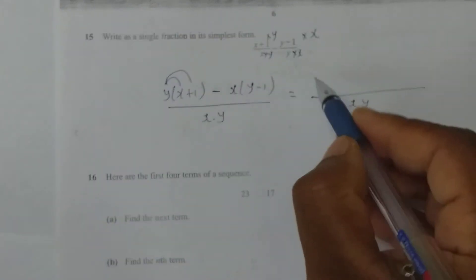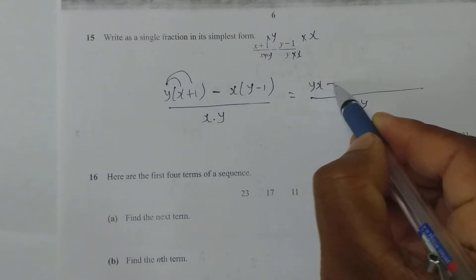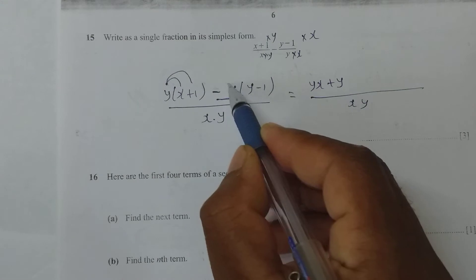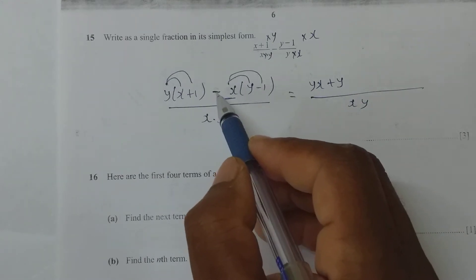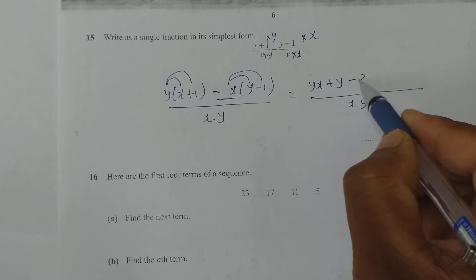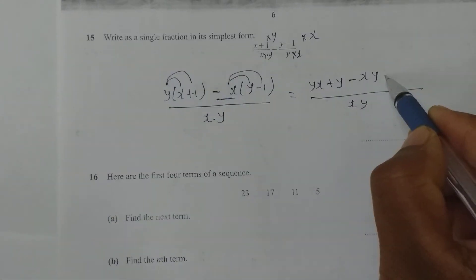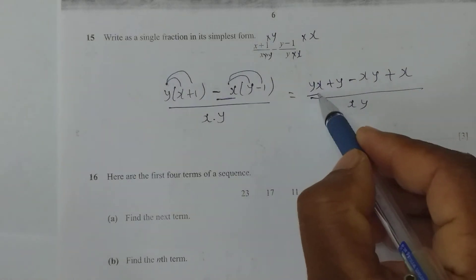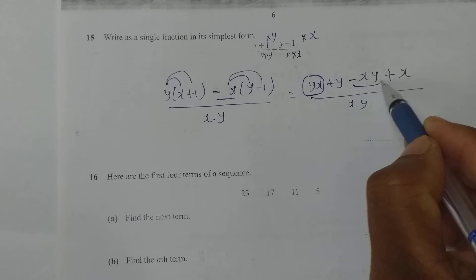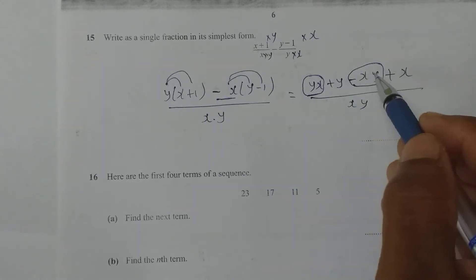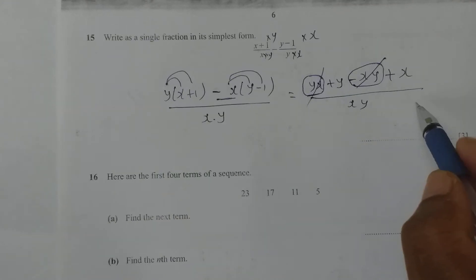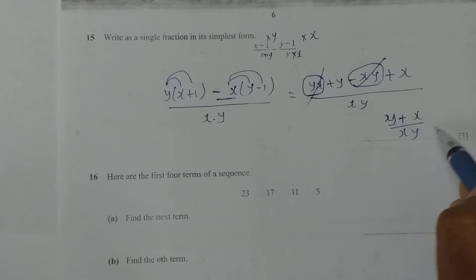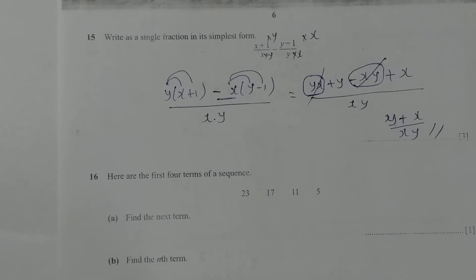This I need to multiply by y. So it becomes y(x+y) minus - now y should become xy, so I multiply by x - so it becomes x(y-1) all over xy. Multiplying out: yx + y minus xy + x. Plus yx and minus xy get cancelled, so final answer is (y+x)/xy.